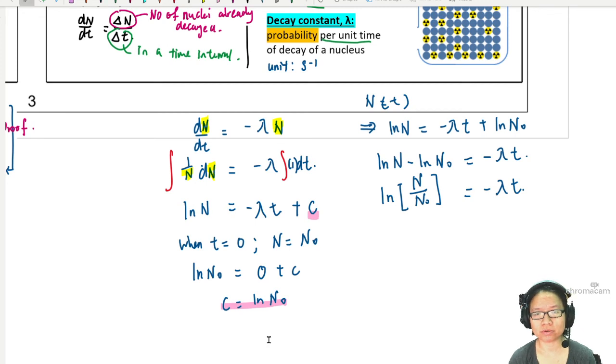Combine the ln so that it can move together. Bring the ln over. The ln over become exponent. So, you have N over N naught equals e to the power of negative lambda t. And a quick kick will bring your N naught back to the exponent. And ta-da!